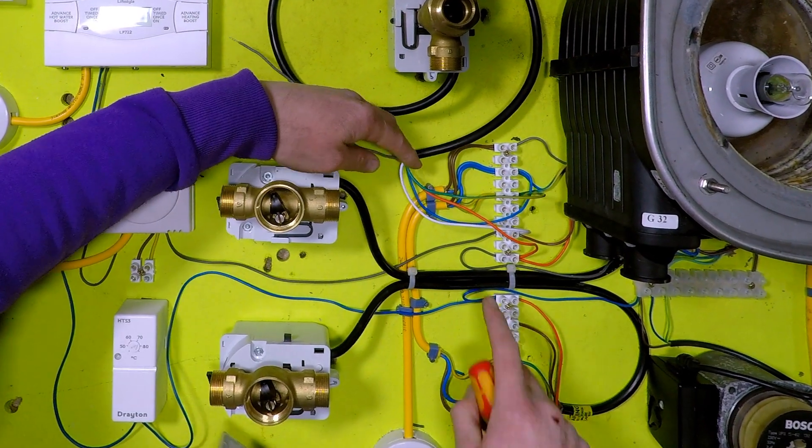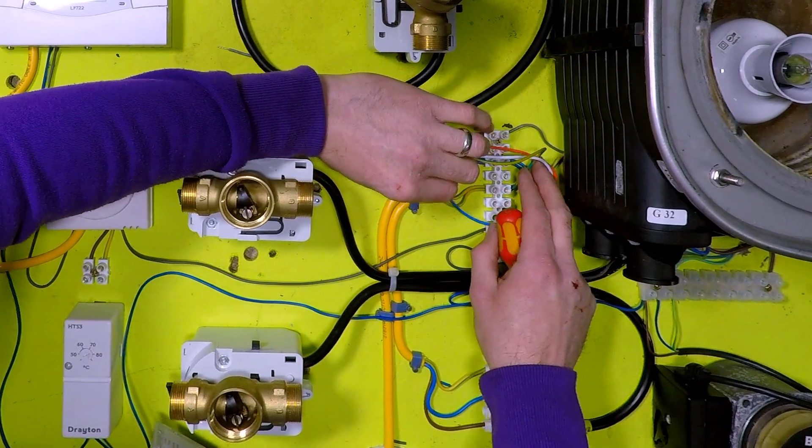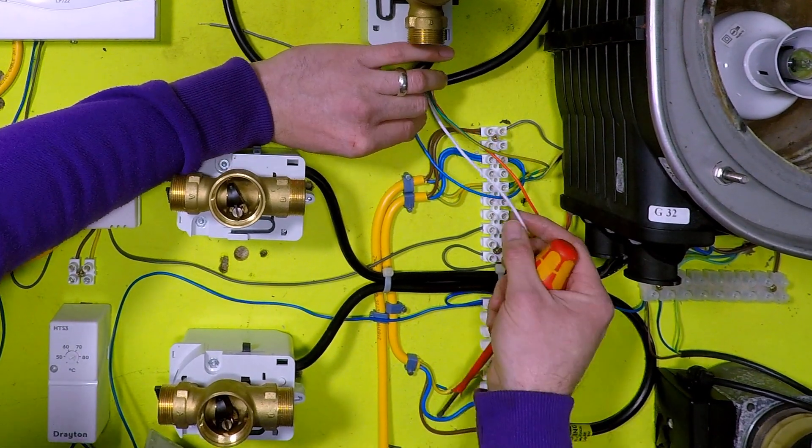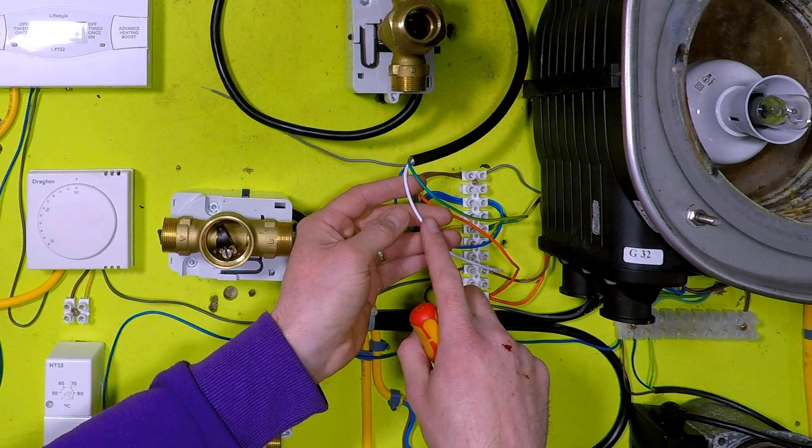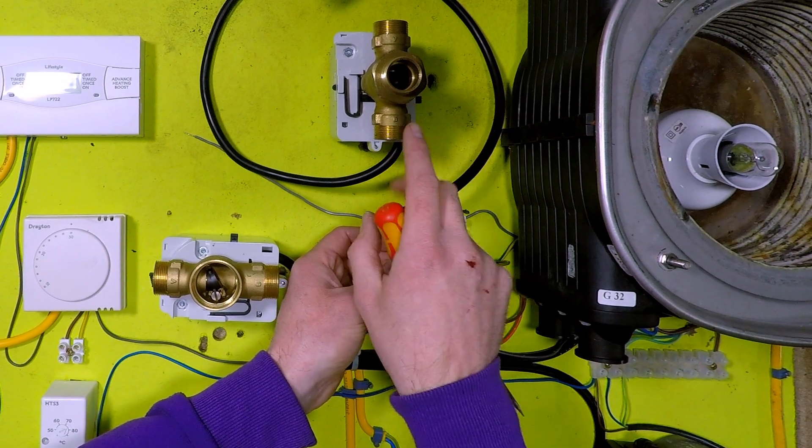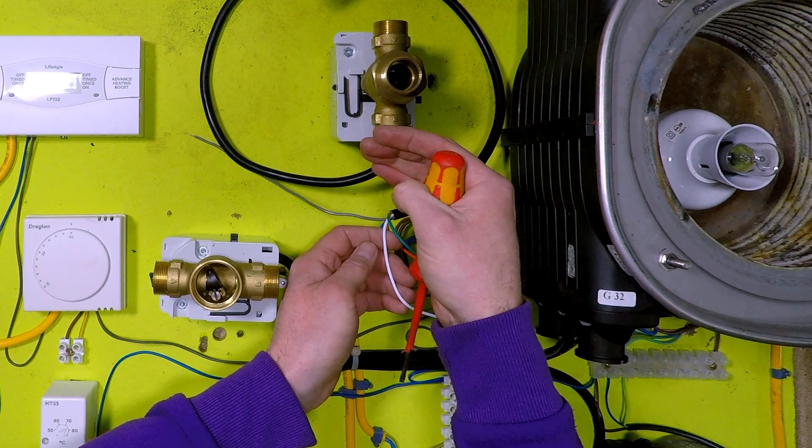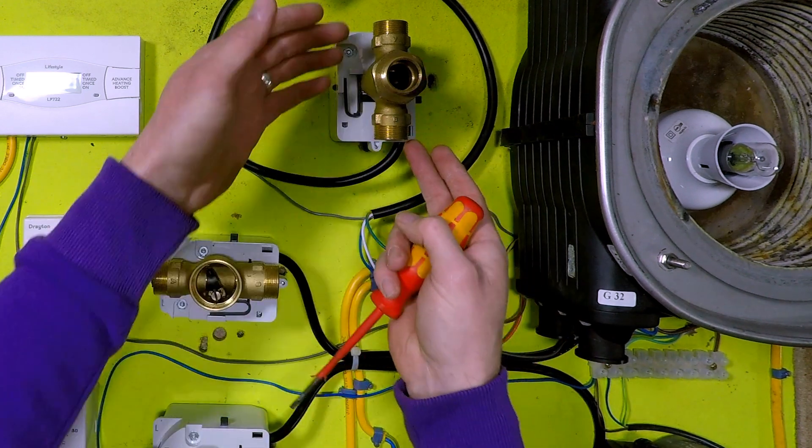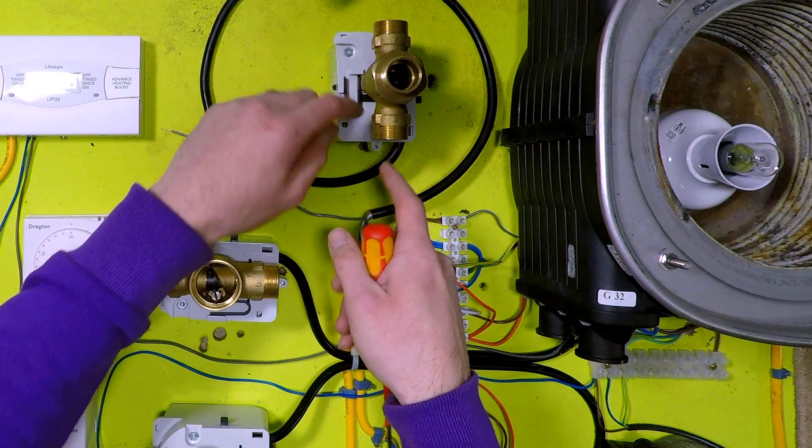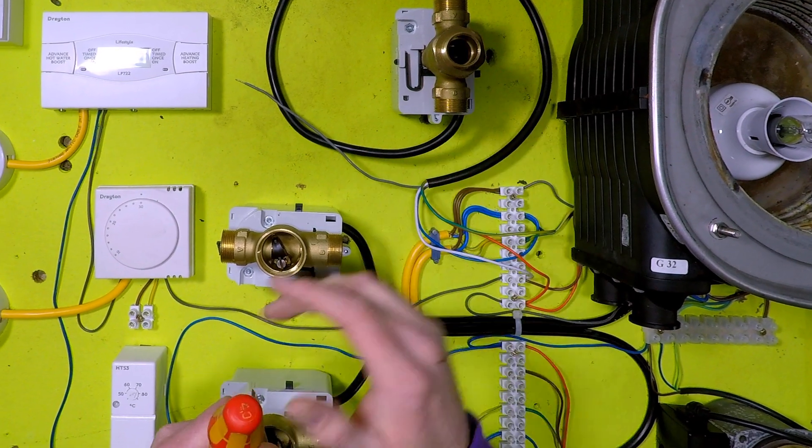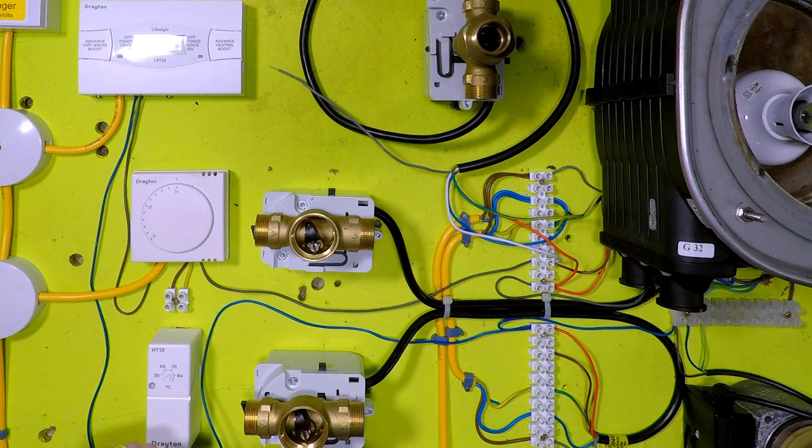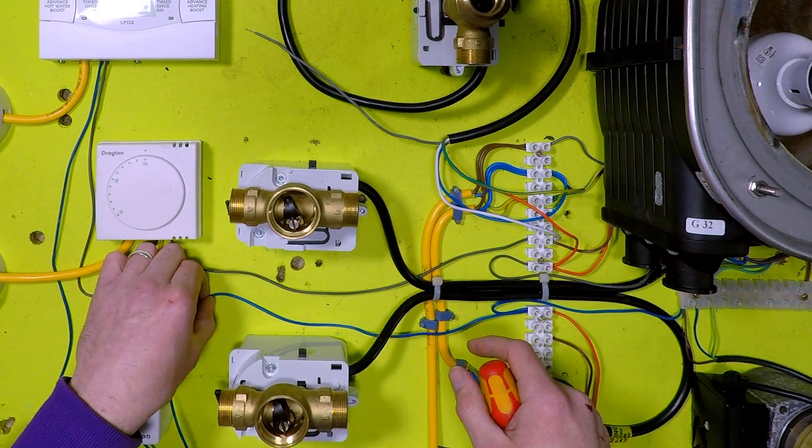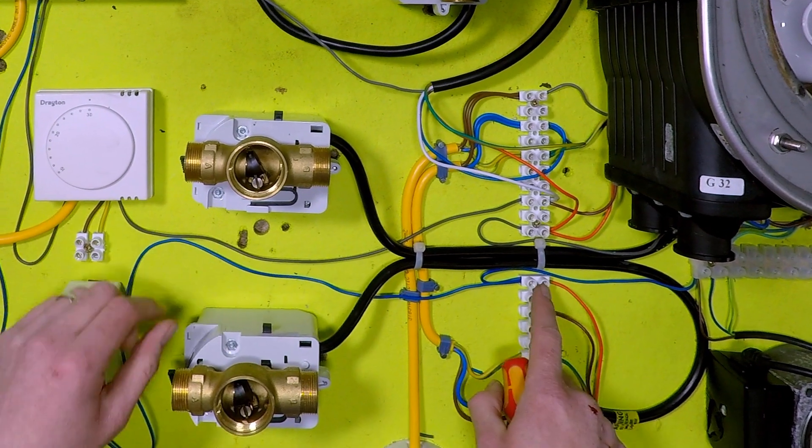From the room thermostat it comes in here. Let's move this to the white wire, and all this white wire will do in a three port is move the valve to mid position. And mid position, the waterways open to both ports, both heating and water. Okay, that's all that does.